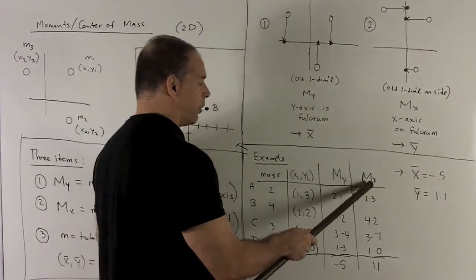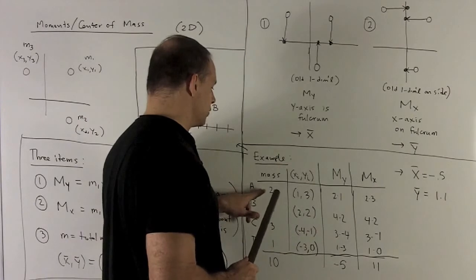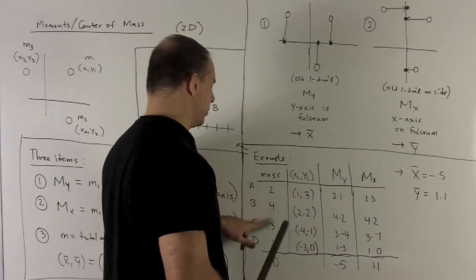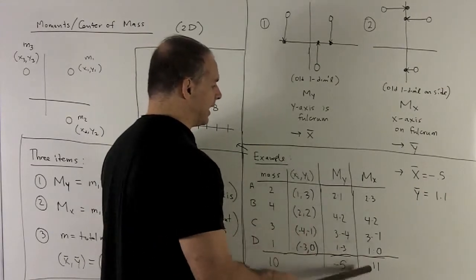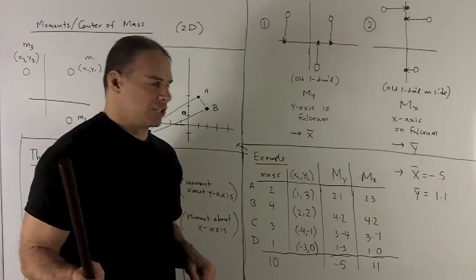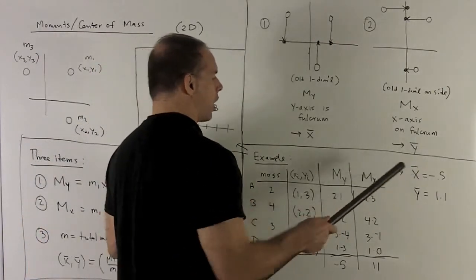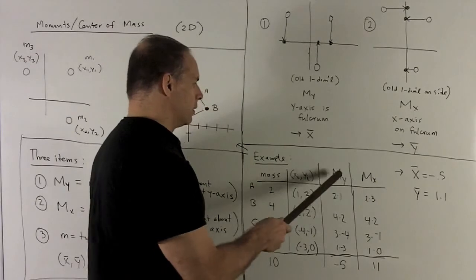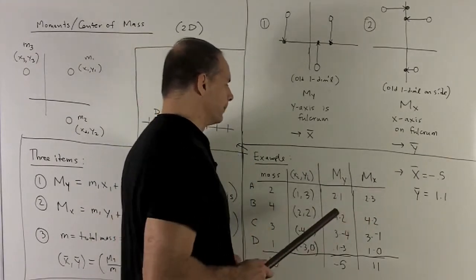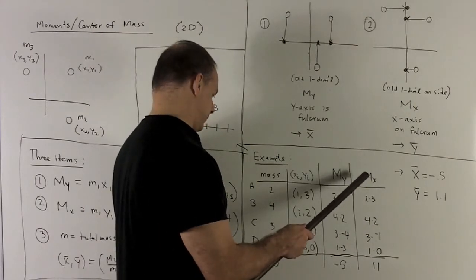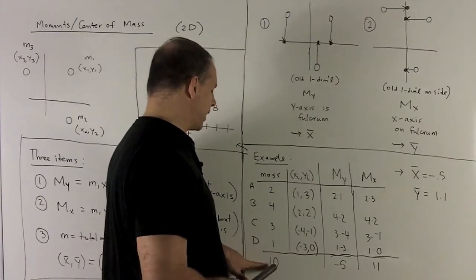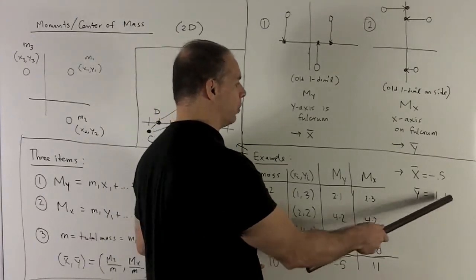If I want the moment about the x-axis, we're going to use all the y values. So, then we're just going to multiply this times y value and then proceed all the way down. We add down, that's going to give me an 11. So, our definition says to get our x-bar, we're going to take the moment about the y-axis divide by the total mass. So, I get minus a half. For my y-bar, I'm going to take the moment about the x-axis and then divide by the total mass. That's going to give me a 1.1.